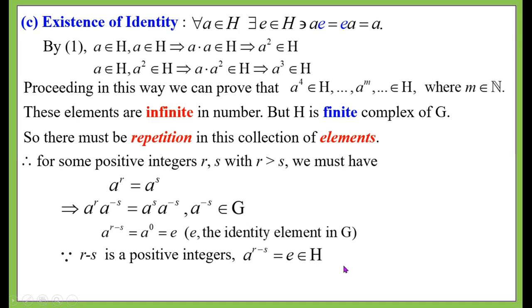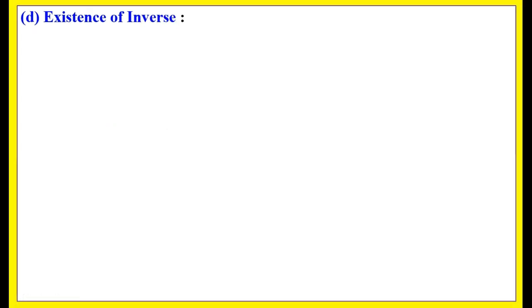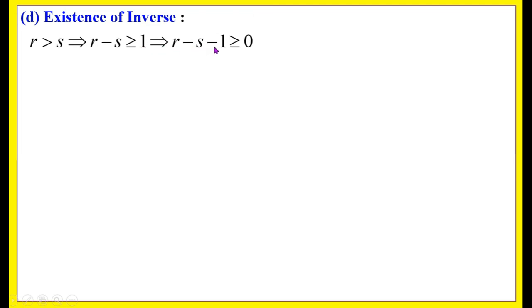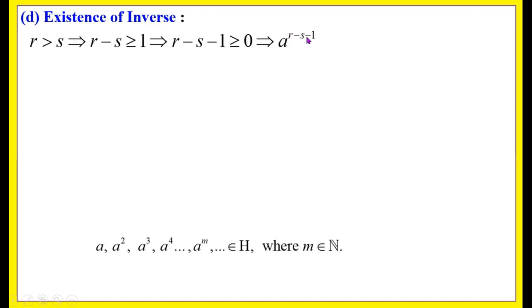Thus we have shown that the identity element exists in H. Now we show that inverse exists for every element in H. Since r > s, we have r - s ≥ 1, which means r - s - 1 ≥ 0. Therefore a^(r-s-1) must be in H, since any positive integral power of a belongs to H.